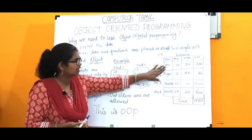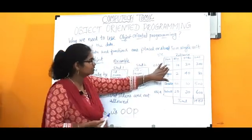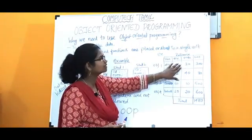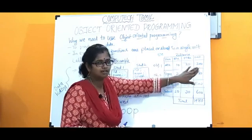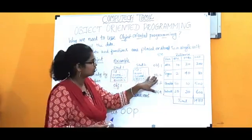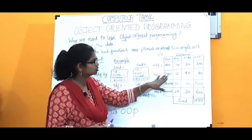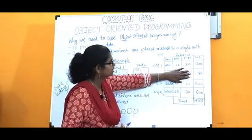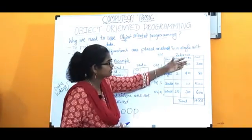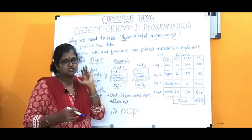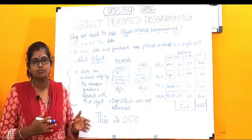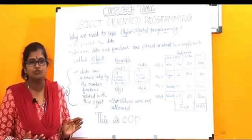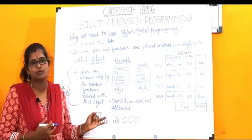A real-time example: in a Reliance market, we have items like milk — object 1, quantity 10, price 30. Object 2 is sugar at 80 rupees. Each item is an object with its own data like name, quantity, price, and amount.